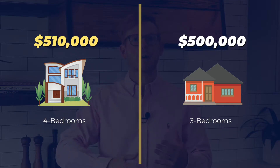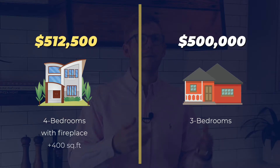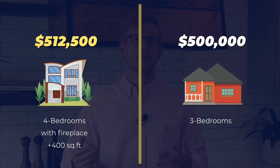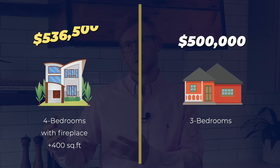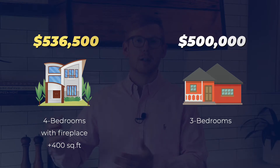You're going to go throughout the home and normalize every feature. If there's a fireplace, plus $2,500. Maybe it has more square footage — depending upon who you talk to, maybe they're considering $60 per square foot. If it's an extra 400 square feet, that's an extra $24,000 that you're adding on to the property or subtracting. You're just subtracting and adding depending upon the features that a home has or does not have.